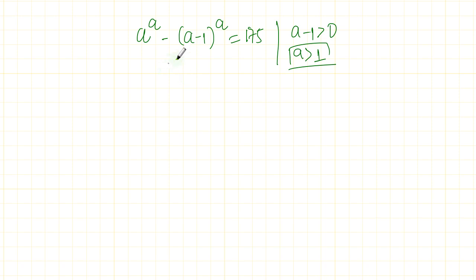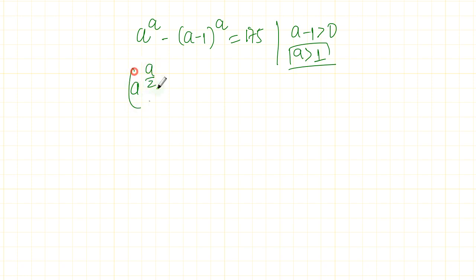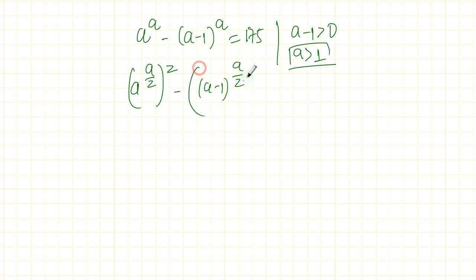Let's come to the problem. Fortunately we have the negative sign here, so it's easy to work on this. I'm going to divide these powers — divide a by 2 in the power and put a square here — minus a minus 1 to the power of a over 2, also divided by 2, to the power of 2, equals 175.